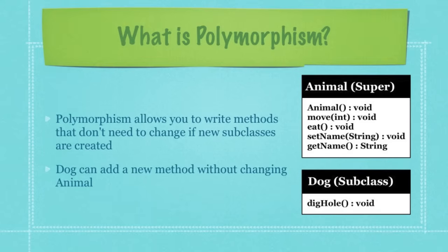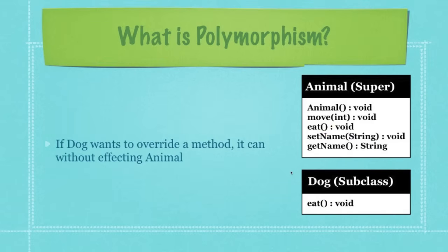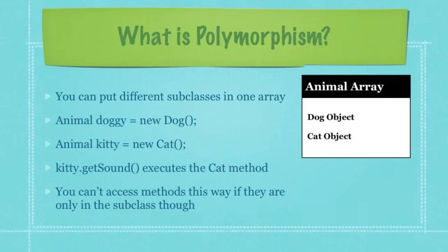What is polymorphism? Polymorphism simply allows you to write methods that don't need to change if new subclasses are created. For example, dog can add a new method called dig hole without changing animal in any way. Also, if dog wants to override a method, it can do so like it did here with eat, also without affecting animal in any way. On top of that, you're going to be able to refer to subclasses by their superclass type.